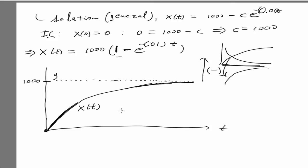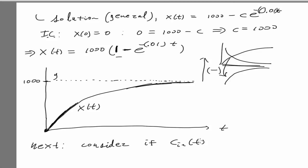That is a specific example of a mixture tank problem — how to set one up and solve it. In the next video we'll do another mixture concentration example where C_in is a function of time, so the concentration of salt varies over time. That will lead to a different behavior for the output concentration. Thank you very much.